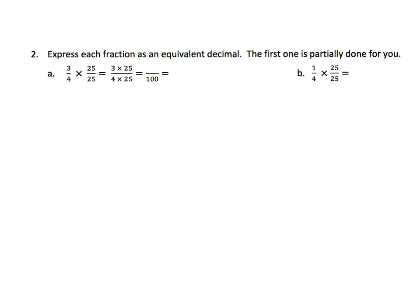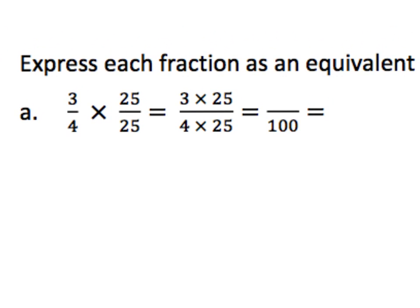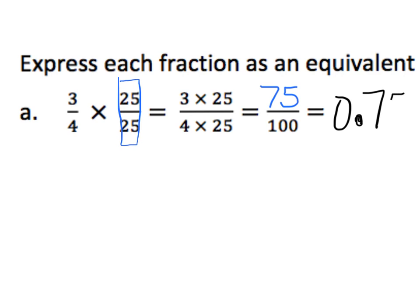Let's continue practicing. We've got 3 fourths being multiplied by 1, which is 25 over 25. So 3 times 25 is 75, and 4 times 25 is 100. Now that we've got 75 hundredths, how do we write that as a decimal? That's 0.75.